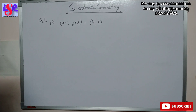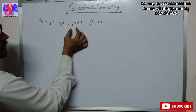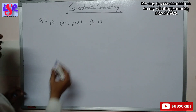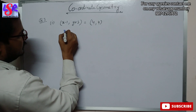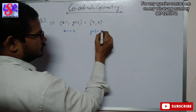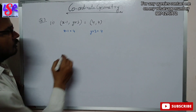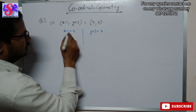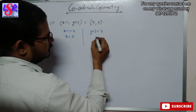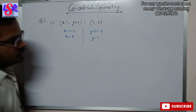Now let us move to question number 3. Here we have to find the value of x and y, as this coordinate is equal to this one. We solve and get x equals to 1 plus 4, that is 5. And y equals to 4 minus 3, that is 1. So we are having x equals to 5 and y equals to 1.